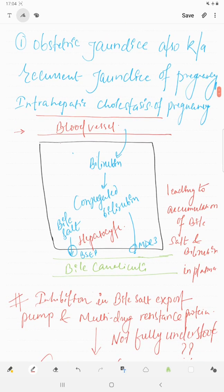To understand that, we need to understand first how bile is formed and transported to biliary canaliculi. Unconjugated bilirubin, which are taken up from blood vessels into hepatocytes, are converted to conjugated bilirubin, which are exported to biliary canaliculi with multi-drug resistance type 3 protein. Bile salt is exported to biliary canaliculi by BSEP, bile salt export protein.